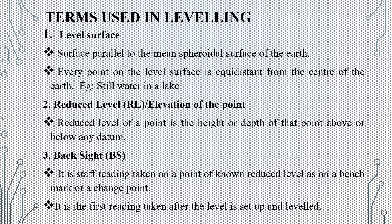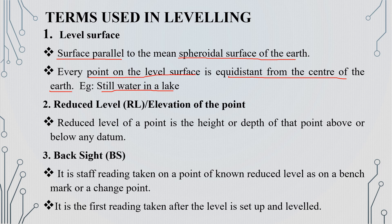Next, we will talk about terms used in leveling. The first term is Level Surface. A level surface is parallel to the mean surface of the Earth. There are equidistant points in this surface, and an example is still water. The next term is Reduced Level, which is the elevation of a point.